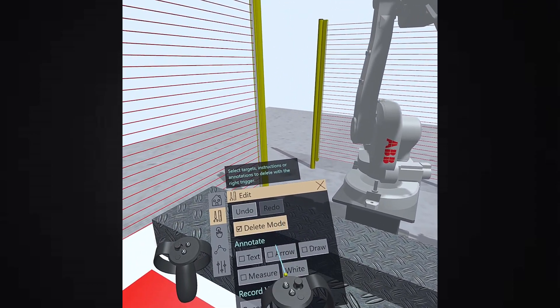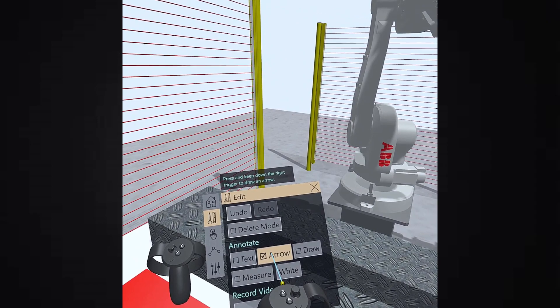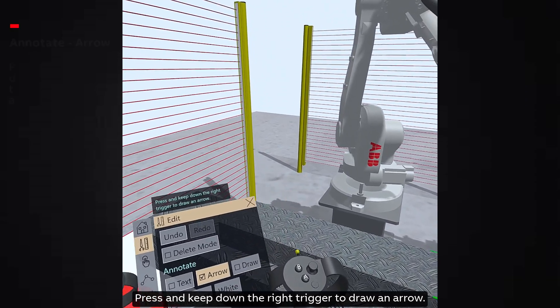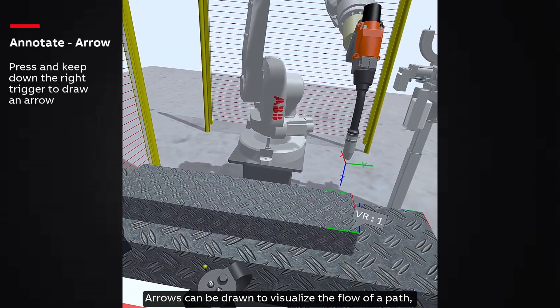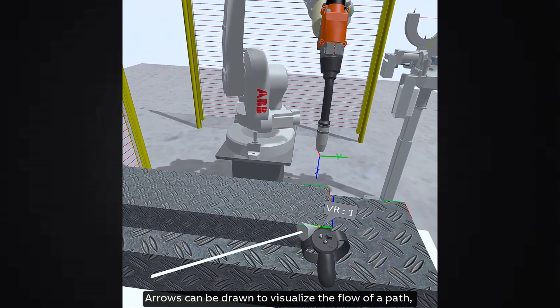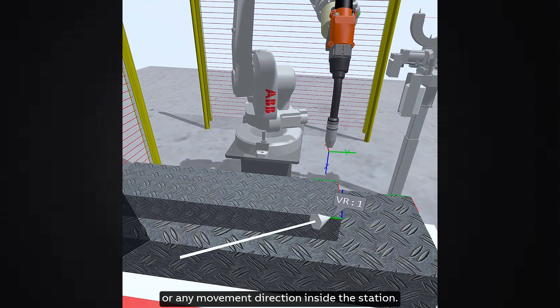Next is arrow. Press and keep down the right trigger to draw an arrow. Arrows can be drawn to visualize the flow of a path or any movement direction inside the station.